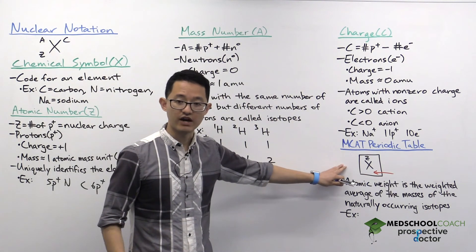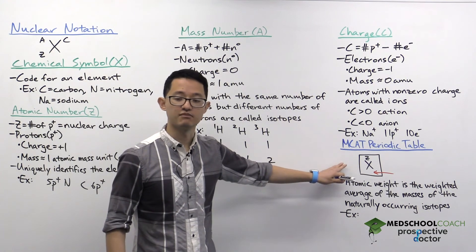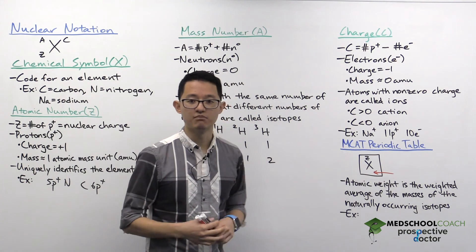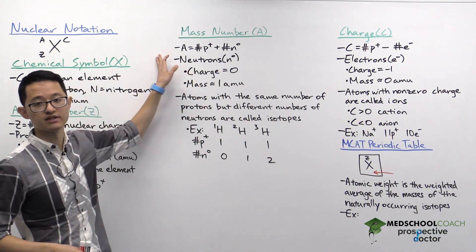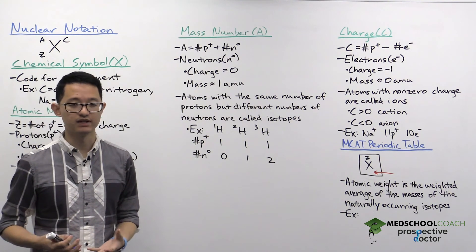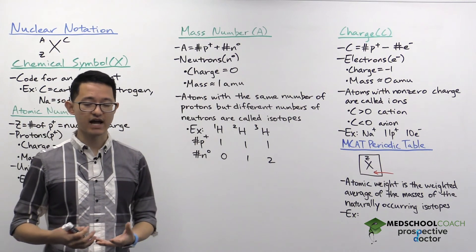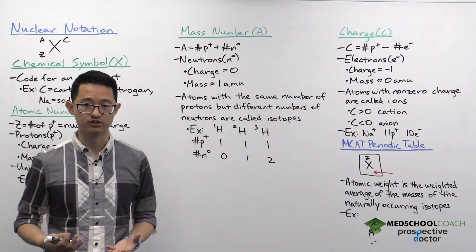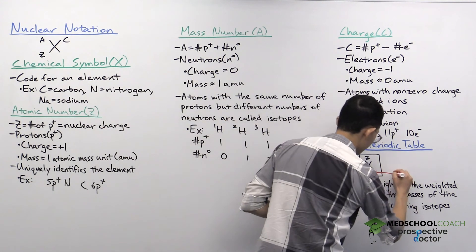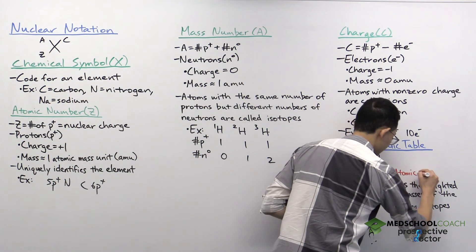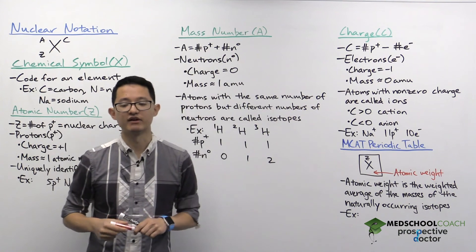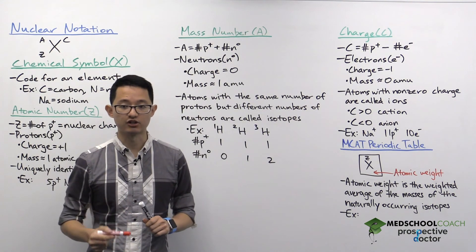But I want to note that this value on the bottom is not the mass number. And that's because when you look at this value, you're going to see that it's a decimal number. And the mass number cannot be a decimal value. It's equal to the number of protons plus the number of neutrons. It has to be a whole number value, because atoms can't have half a proton or a third of a neutron inside its nucleus. So what this value really is, is the atomic weight. And the atomic weight is able to have a decimal value because it's equal to the weighted average of the masses of the naturally occurring isotopes.